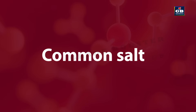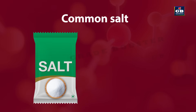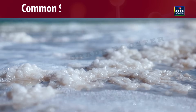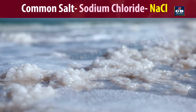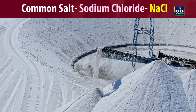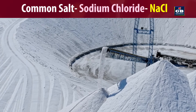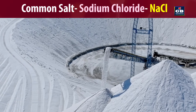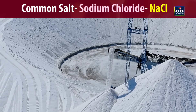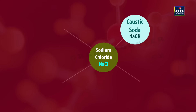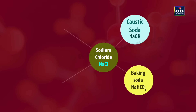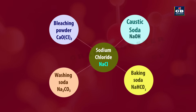Now let us learn about the important salt sodium chloride. Since it is used in our day-to-day life, it is also called common salt. It is the main ingredient in making many useful chemical compounds: sodium chloride is used to make caustic soda, baking soda, washing soda and bleaching powder.